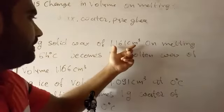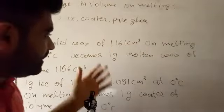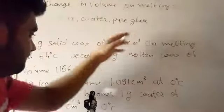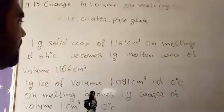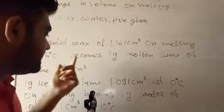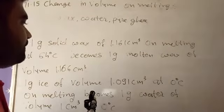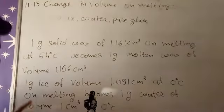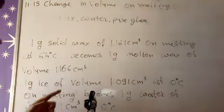So before that, our volume is 1.161 centimeter cube, but after giving temperature, here our new volume will be 1.166 centimeter cube. So another example here: 1 gram ice of volume 1.091 centimeter cube at 0 degree celsius.